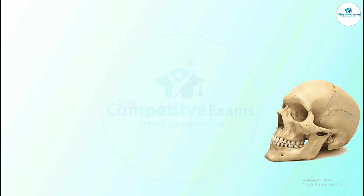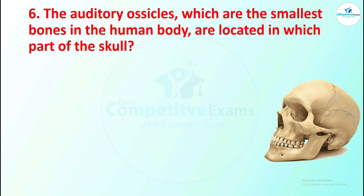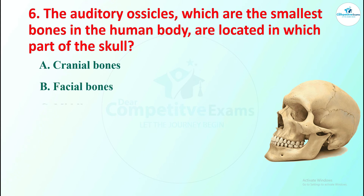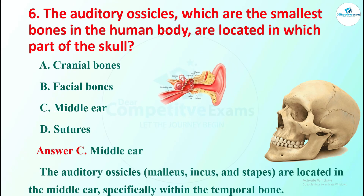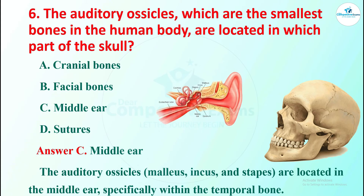The next question: the auditory ossicles, which are the smallest bones in the human body, are located in which part of the skull? Options are cranial bones, facial bones, middle ear, or sutures. The right answer is the middle ear. The auditory ossicles — the malleus, incus, and stapes — are located in the middle ear, specifically within the temporal bone.